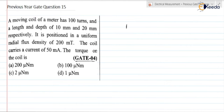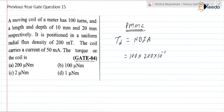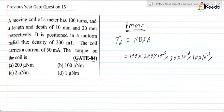We are having a PMMC instrument. As we know in a PMMC instrument, the deflecting torque is equal to N·B·I·A. N is the number of turns, it is 100. B is the flux density, it is 200 milli tesla, so 200 into 10 to the power minus 3. Current I is given as 50 milli ampere, 50 into 10 to the power minus 3. Area is length into depth: 10 into 10 to the power minus 3, into 20 into 10 to the power minus 3. If you simplify it, you will get 200 micro newton meter.